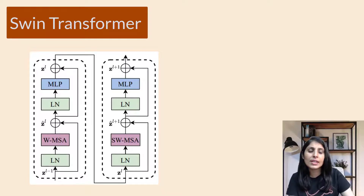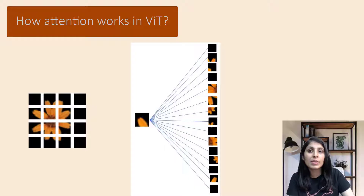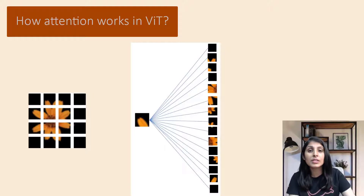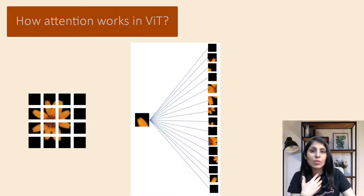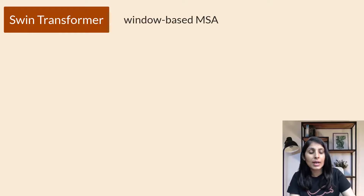Before discussing these in detail, let's see how the multi-head self-attention layer works in Vision Transformers. In a Vision Transformer, the attention mechanism calculates the relationship between each patch and all other patches in the image. This approach has high computational complexity, making it inefficient for high-resolution images, because each patch is compared with every other patch.